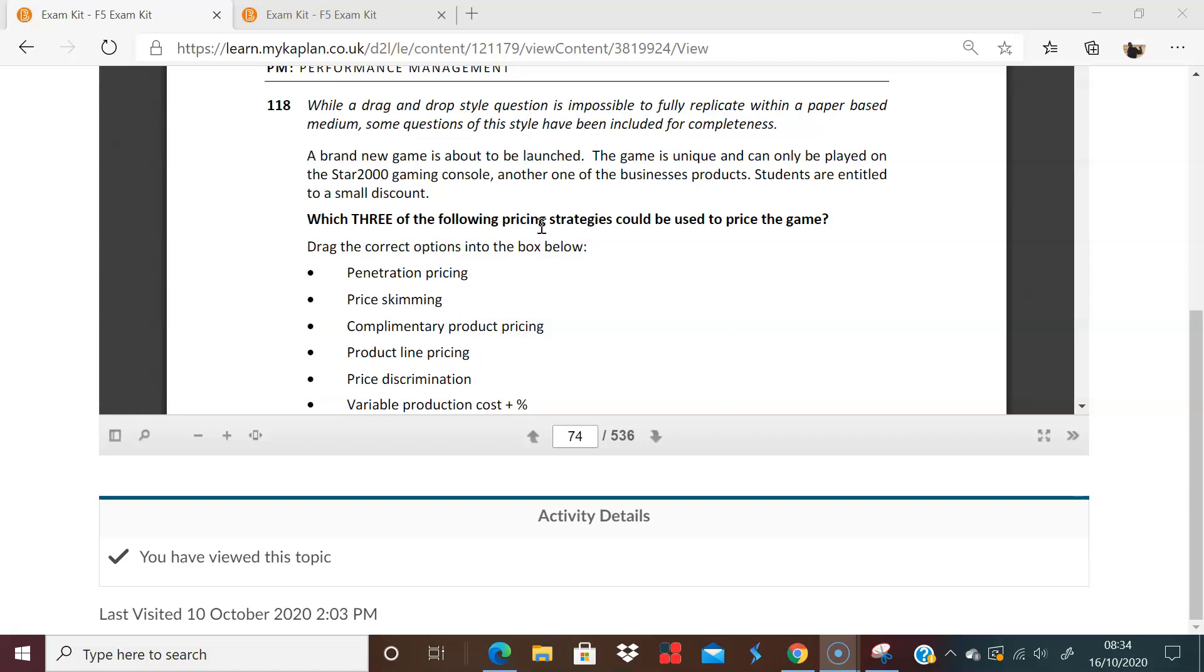Right. Brand new game is about to be launched. The game is unique, so we can definitely do some price skimming there. As soon as you see that brand new game, game is unique, definitely price skimming. And can only be played on a certain console, so complementary product pricing. Students are entitled to a small discount, price discrimination. So price skimming, penetration pricing, why waste an opportunity to make as much money as you can. Price skimming yes, complementary product pricing yes, and price discrimination yes. Definitely these three are the best. Product line, I wouldn't call it part of a product line. It's just you can buy it with the console. So definitely penetration, price skimming, and price discrimination are the best ones there.